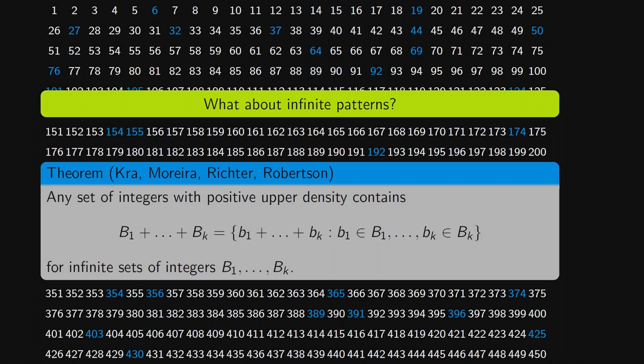For k equals 2, for just two sums, this was previously proven by Moreira, Richter, and Robertson in a really beautiful paper, but we needed new methods to approach higher k, for k bigger than or equal to 3, and it turns out it's exactly the same dynamical objects that are controlling the averages that come up in Furstenberg's theorem that I mentioned earlier. So these same objects that I've worked on for much of my life came back to be of use in this theorem.